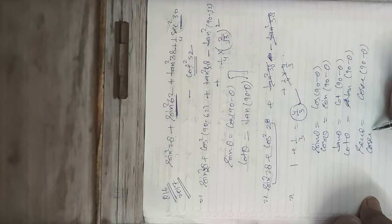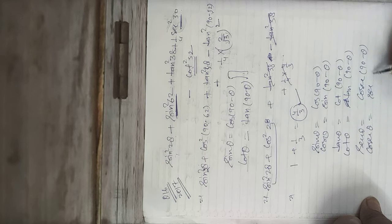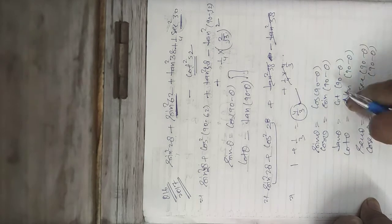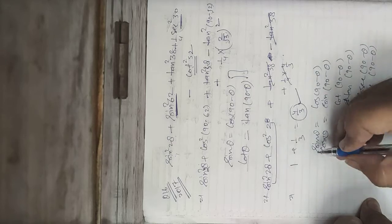And cosecθ is complementary to sec(90−θ). Remember, they are called complementary angles.